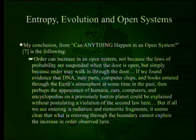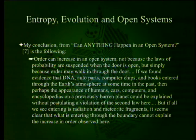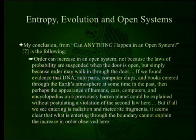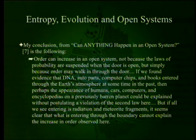If we found evidence that DNA, auto parts, computer chips, and books entered through the Earth's atmosphere at some time in the past, then perhaps the appearance of humans, cars, computers, and encyclopedias on a previously barren planet could be explained without postulating a violation of the second law here. But if all we see entering is radiation and meteorite fragments, it seems clear that what is entering through the boundary cannot explain the increase in order observed here.